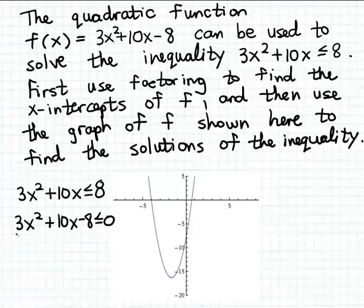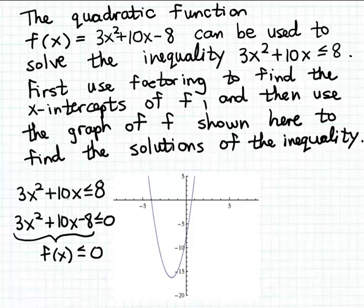I'm going to think of the left-hand side of this inequality as the formula for a function which I'll call f. So we can rewrite this inequality as f of x less than or equal to zero, where f is the function 3x squared plus 10x minus 8. This rewritten inequality tells us we're looking for the inputs x to the function f that will make the matching output less than or equal to zero — those inputs x are the solutions to the original inequality.